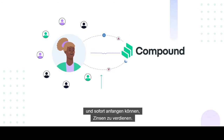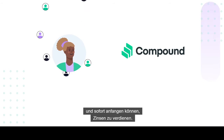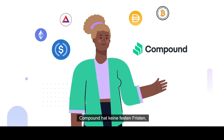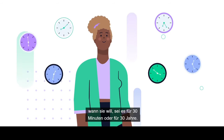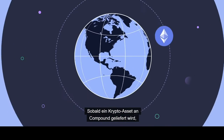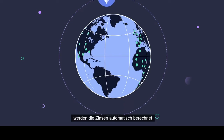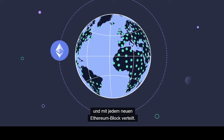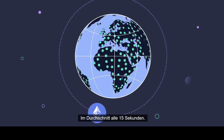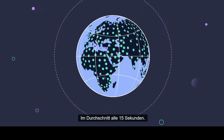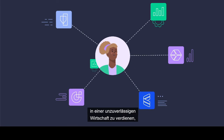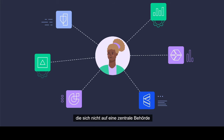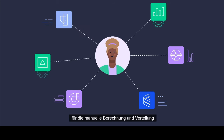Individuals like Maya can supply their assets to Compound and immediately begin earning interest. Compound has no fixed terms, meaning that Maya can supply and borrow when she pleases, whether that's for 30 minutes or 30 years. Once a crypto asset is supplied to Compound, interest is automatically calculated and distributed with each new Ethereum block — every 15 seconds on average.